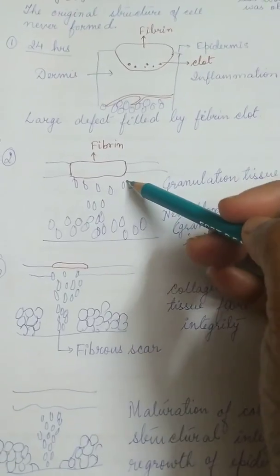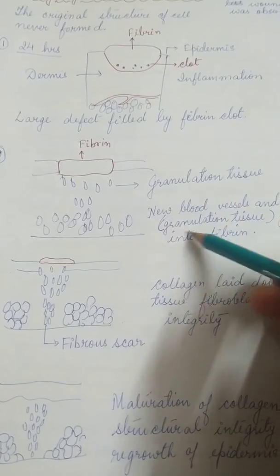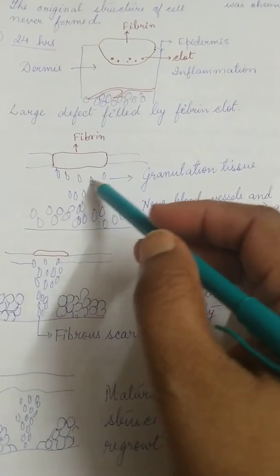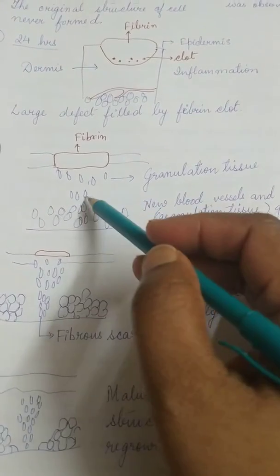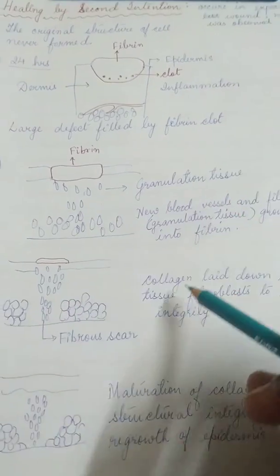After that, from day 2 to day 7, granulation tissue invades over here and the blood vessels are formed, the fibrinoblast comes over here.